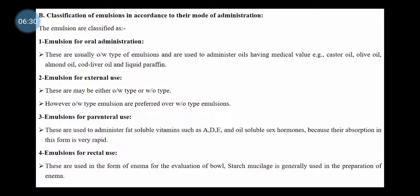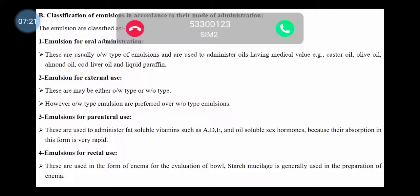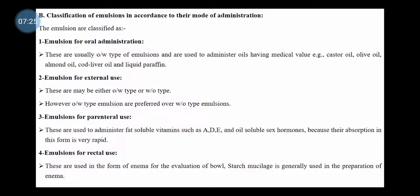Emulsions for parenteral use. Generally, parenteral use emulsions or injectables contain vitamin A, D, E, oil-soluble components, or sex hormones, because their absorption in this form is very fast and rapid. Parenteral preparations typically include fat-soluble vitamins such as A, D, E, and K. Apart from that, there are some sex hormones which are oil-soluble, and those are also given through parenteral use because their absorption is higher in emulsion form.